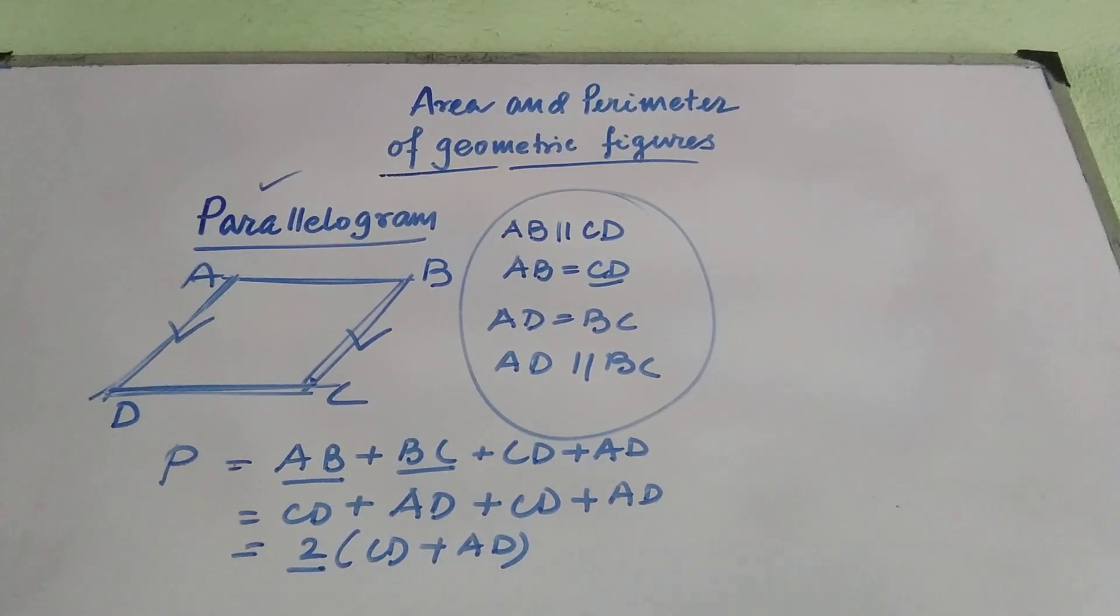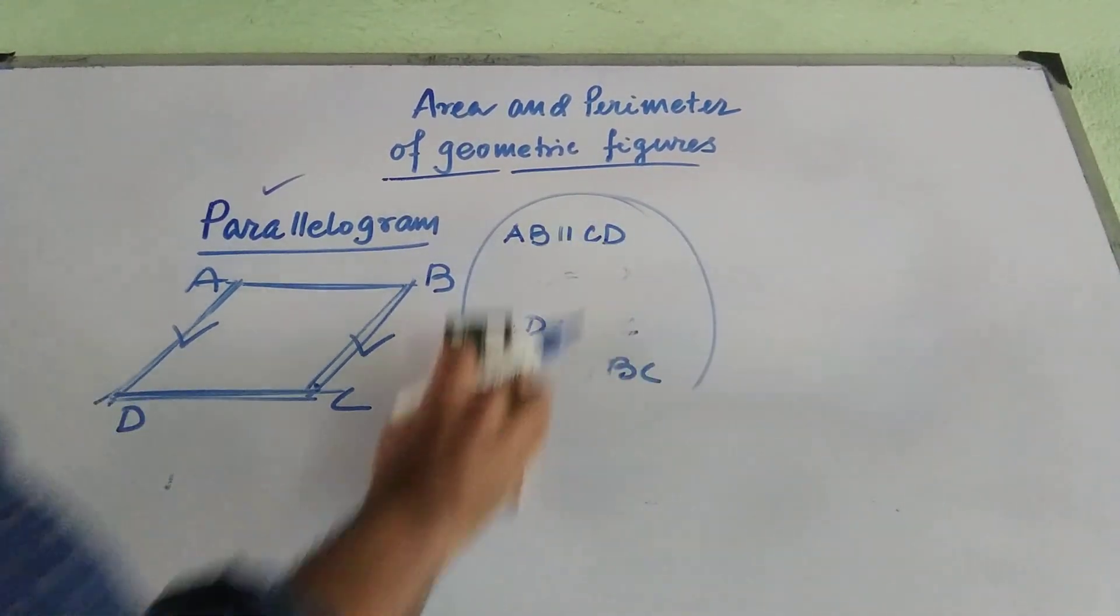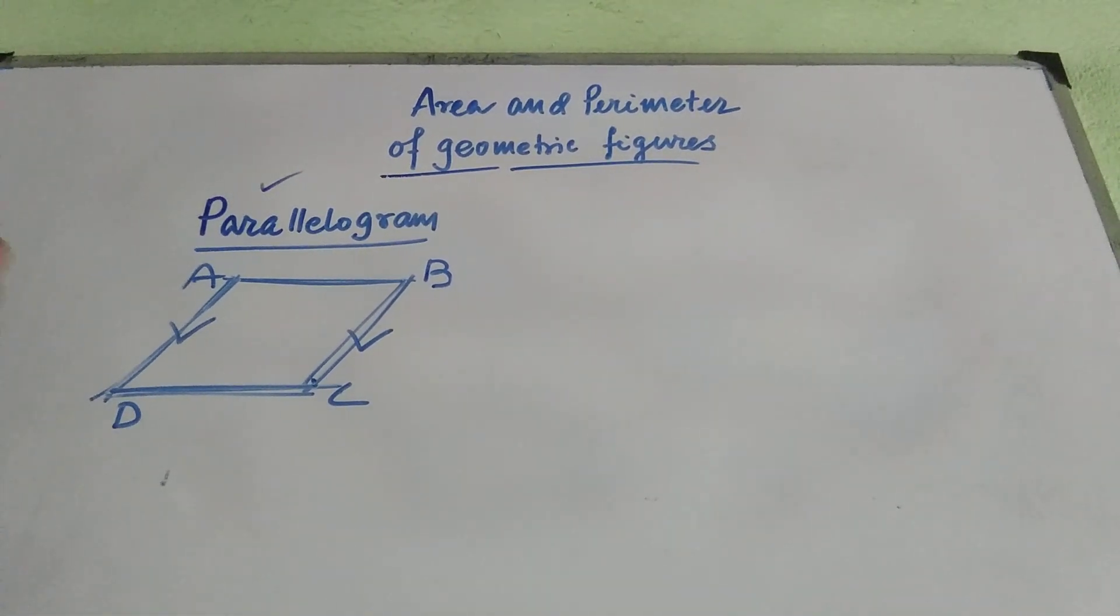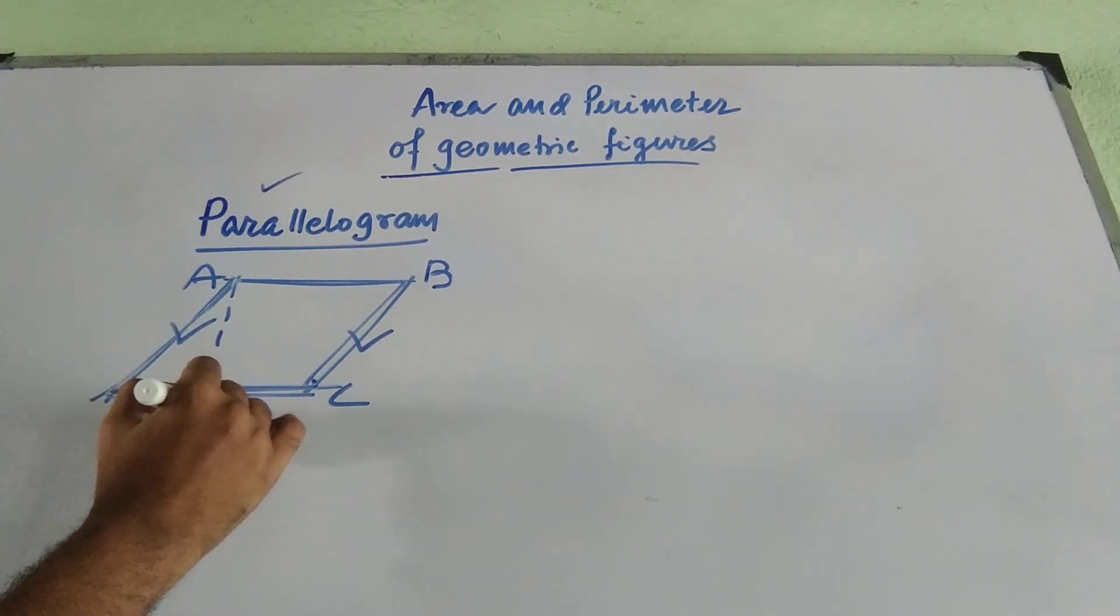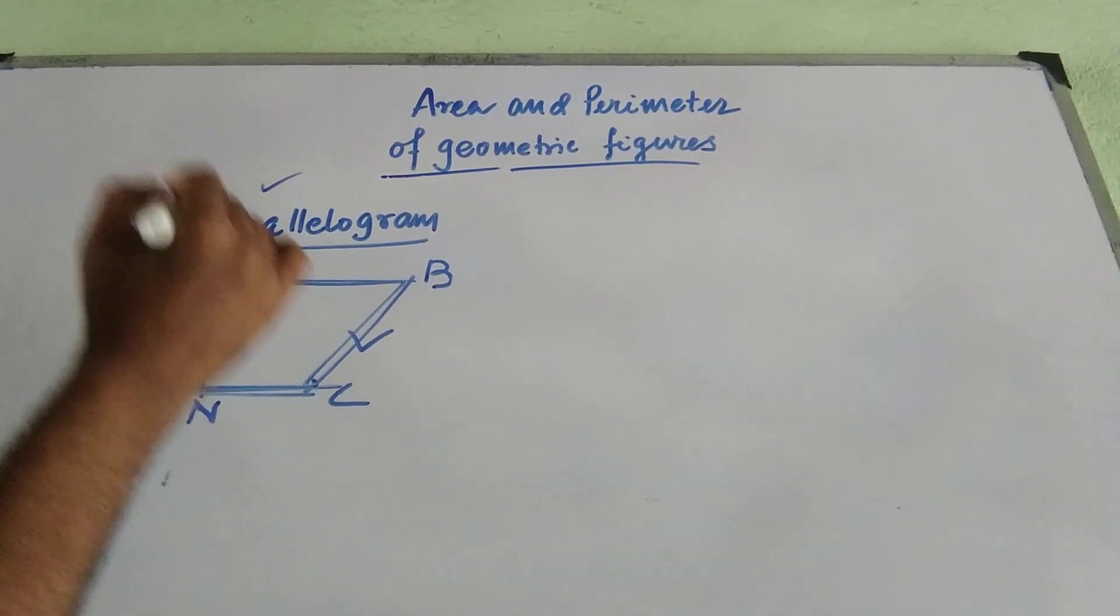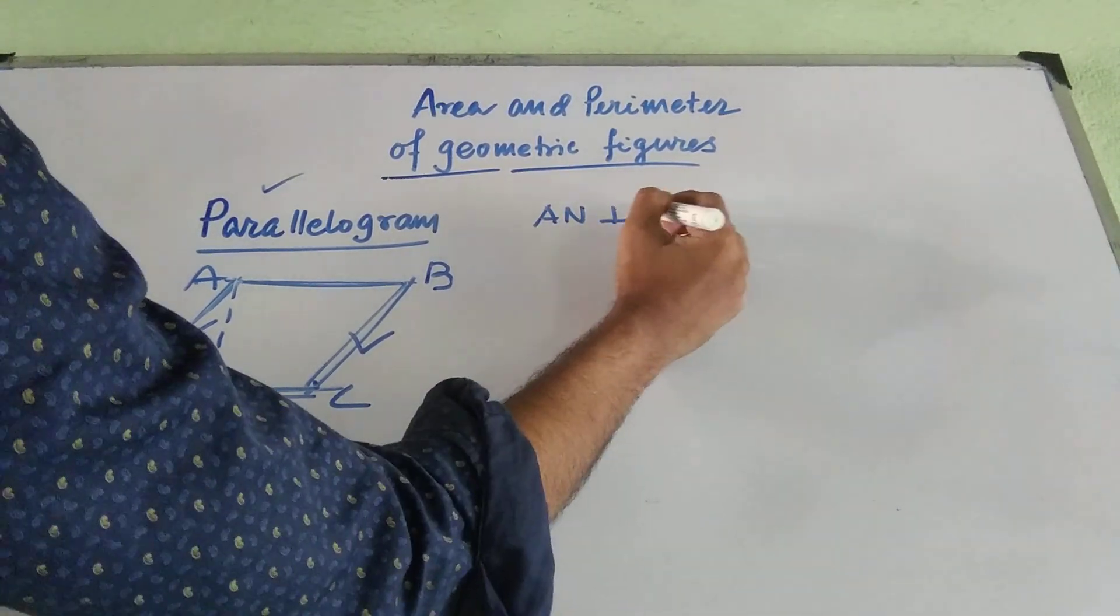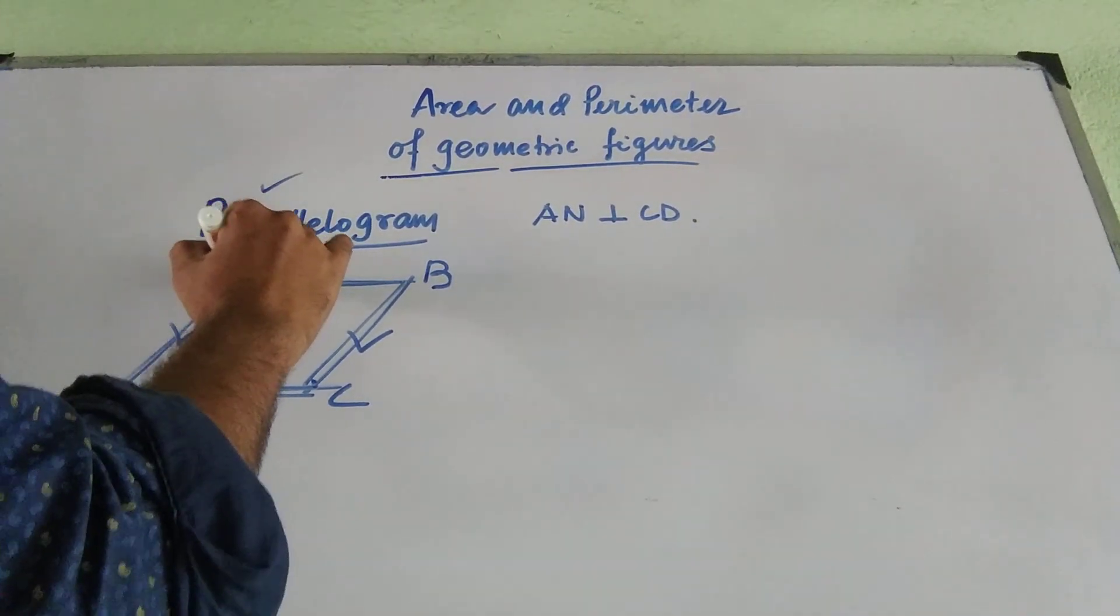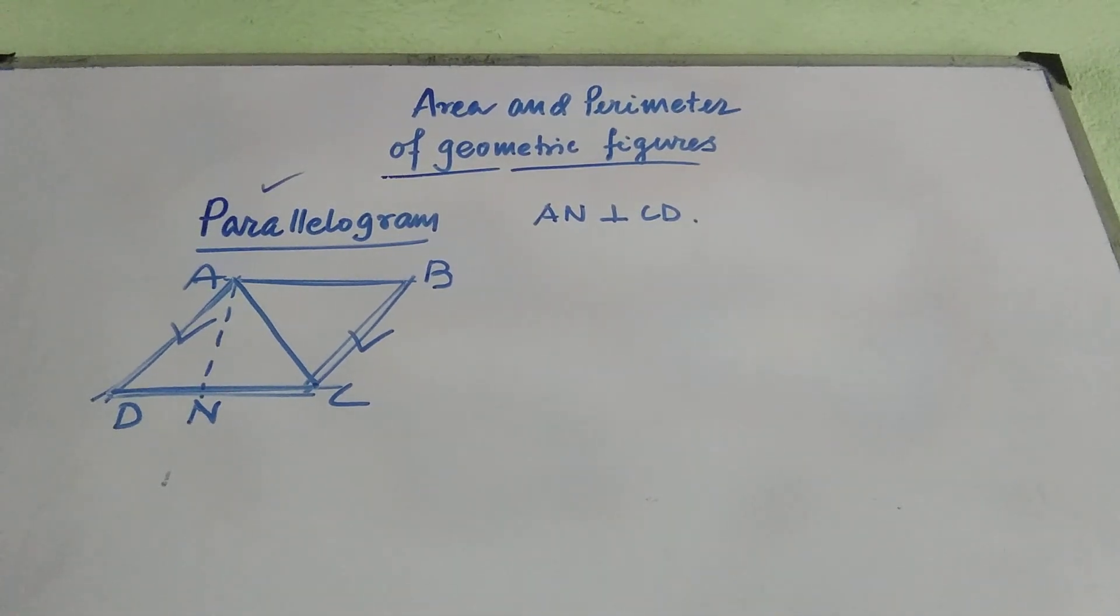Now, how to find out the area of this particular parallelogram? For that purpose, I will be doing just one thing and I will show you how to do that. I am drawing a perpendicular. Let it be cutting the line CD at N. So that means, I am drawing a perpendicular AN on the base CD. Now, I am drawing the diagonal of the parallelogram ABCD. What is the diagonal? Diagonal is a straight line connecting the opposite two vertices.